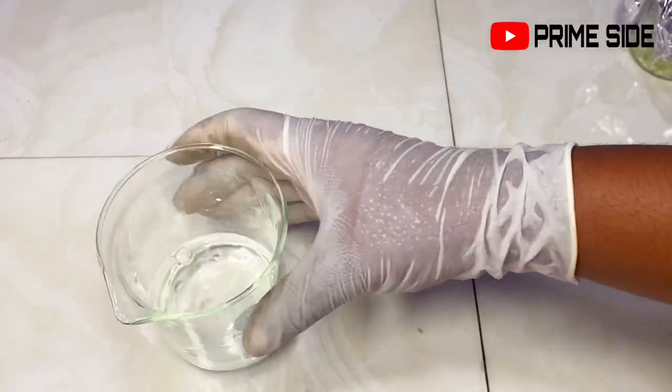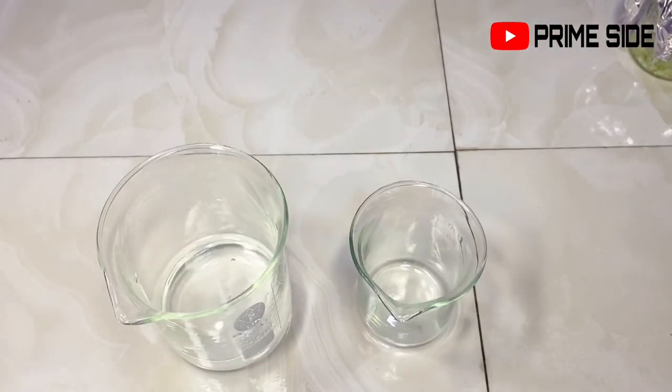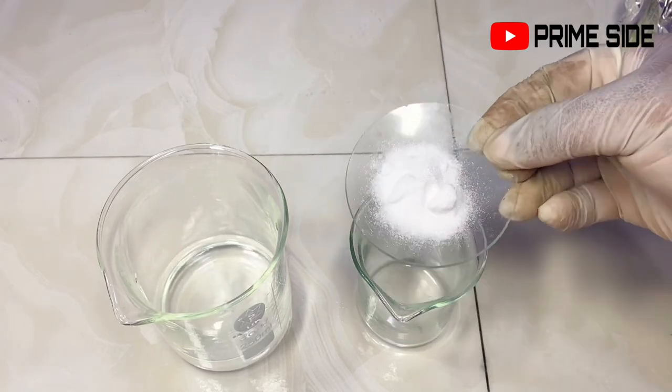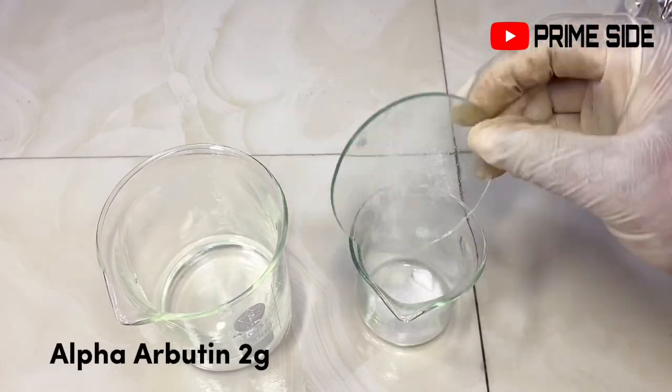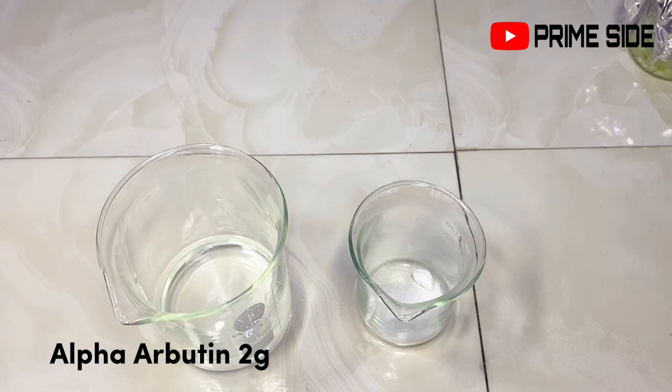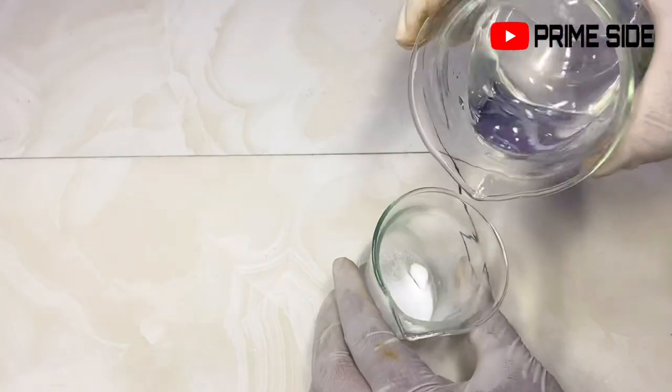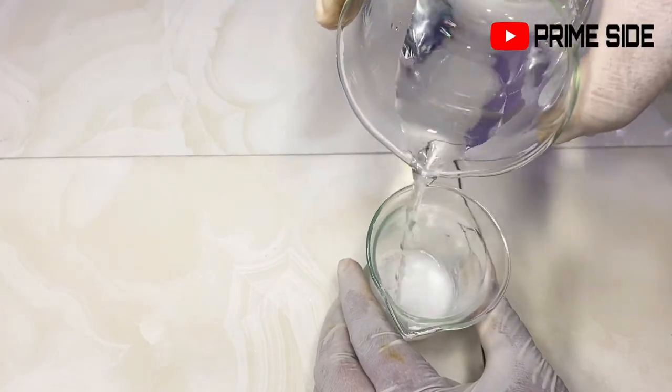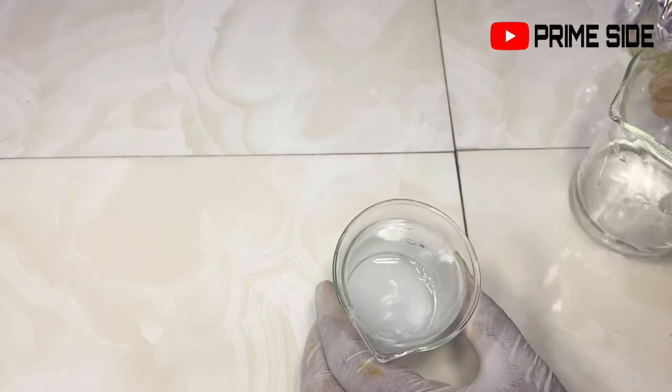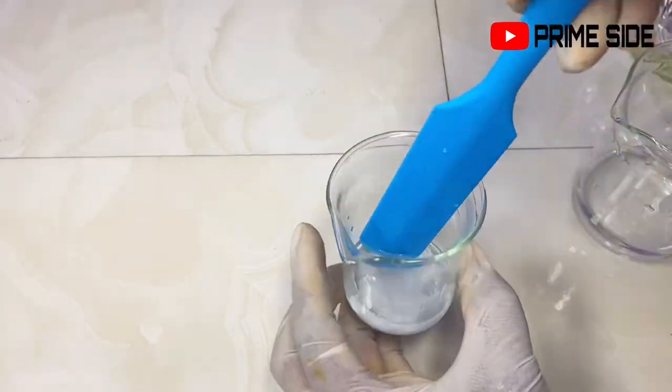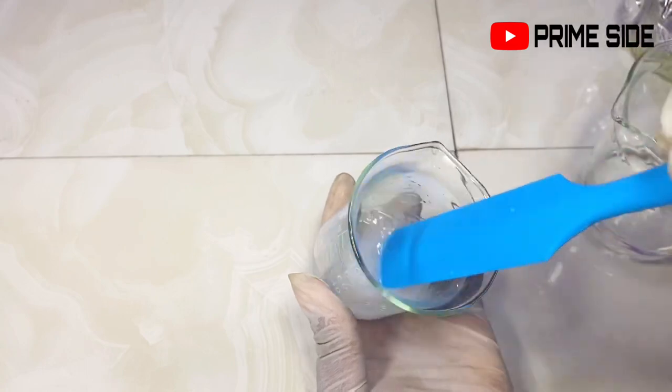After this, I'm going to take out some water to dissolve my remaining active ingredient. This is Alpha Arbutin. I do not want to heat my Alpha Arbutin. So I'm just going to take out some water to dissolve it separately. This is why I said pay full attention to how I dissolve my active ingredients in order to make your face cream very effective.